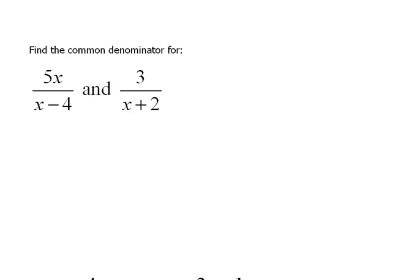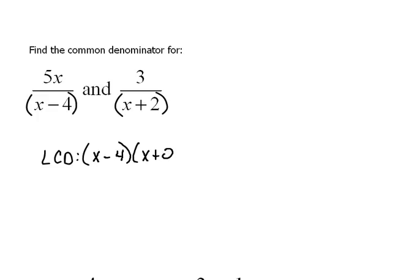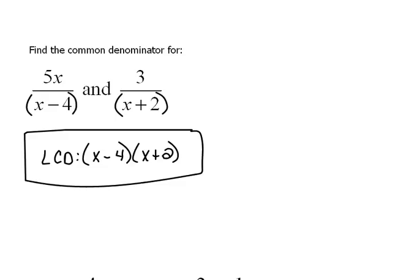Let's look at another one. Here we want to find a common denominator for two fractions. In this denominator, x minus 4 is an entire item — it stays together. You either use x minus 4 or nothing; you can't break it apart because it's a binomial. Likewise with x plus 2 — it is one item. So whenever we go to find our LCD, that would be x minus 4 and also x plus 2. If we don't account for both of them, we're going to have a missing part.